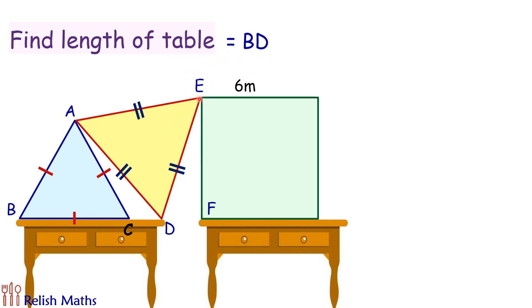For the same we will do a small construction. Let's join EC. So we are joining EC here and now we will be considering two triangles, triangle ABD and ACE. Triangle ABD is this purple triangle we are talking about and triangle ACE is this green triangle.